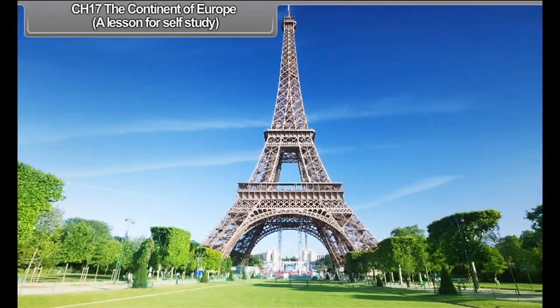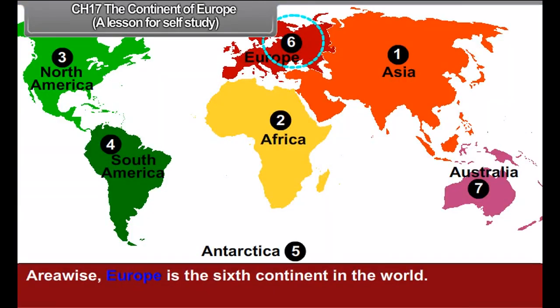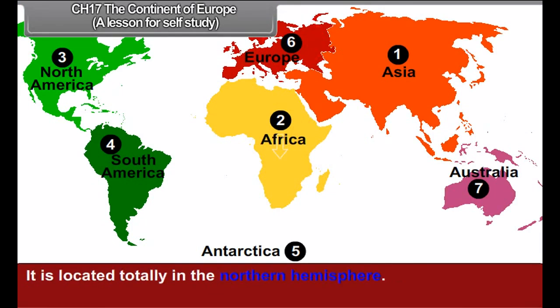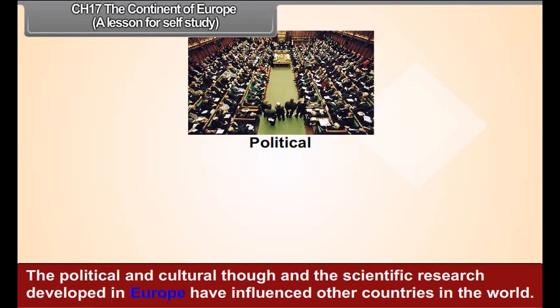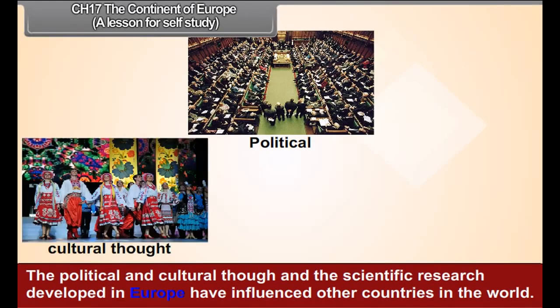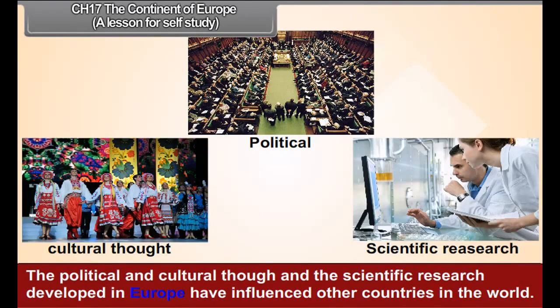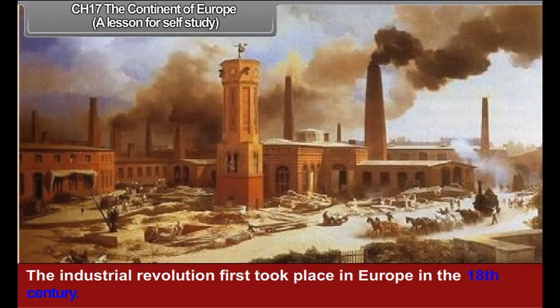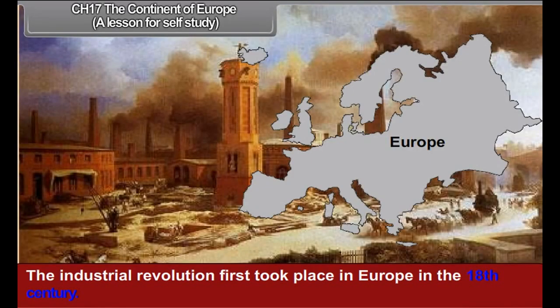Chapter 17: The Continent of Europe — A Lesson for Self-Study. Area-wise, Europe is the sixth continent in the world. It is located totally in the Northern Hemisphere. The political and cultural thought and the scientific research developed in Europe have influenced other countries in the world. The Industrial Revolution first took place in Europe in the 18th century.